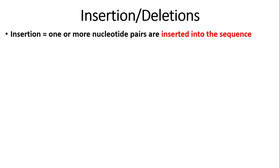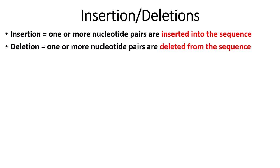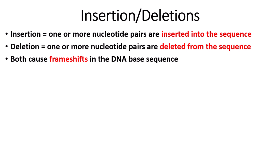Now I'm going to talk about insertion mutations and deletion mutations. You'll be familiar with deletion mutations from AS. Insertion is when one or more nucleotide pairs are inserted into the sequence, and deletion is when one or more nucleotide pairs are deleted from the sequence. Both of these cause frame shifts in the DNA base sequence — when the whole sequence shifts depending on where the mutation takes place. However, the frame shifts are different for insertions and deletions.